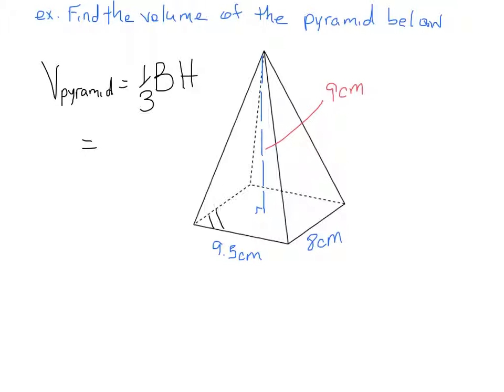All right, so what do I do with this? Well my base is here. So the base area, one-third the base area which is 9.5 times 8 because that's a rectangle times the height.